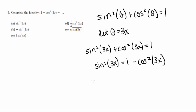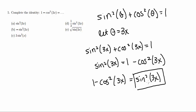So now, just rewriting this, I'm just going to switch the sides. 1 minus cosine squared of 3x is equal to sine squared of 3x. There we go. And this here is our answer.